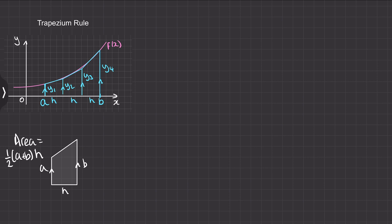So for our first trapezium the area will be one half of the sum of the two parallel sides, so y1 plus y2 multiplied by the base h. And then we can work out the area of a second trapezium, and again this will be one half of the sum of the two parallel sides y2 and y3 multiplied by the base.